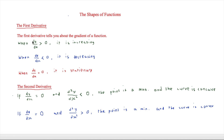The first derivative tells you about the gradient of a function. When dy/dx is greater than zero, the gradient is greater than zero and it is an increasing function. When dy/dx is less than zero, it is a decreasing function because the gradient is also less than zero. And when dy/dx is equal to zero, the gradient is also zero, which means it is a stationary point.